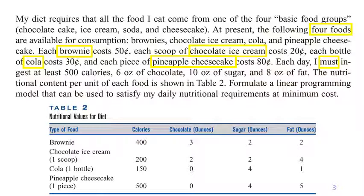I want to highlight that when you see the phrase 'I must ingest at least,' the word 'at least' tells you this is about a constraint. This sentence restricts the solution such that you must have at least 500 calories, 6 ounces of chocolate, and so on. So the sentence 'each day I must ingest at least so and so' is about the constraint. The objective is to satisfy nutritional requirements at minimum cost.